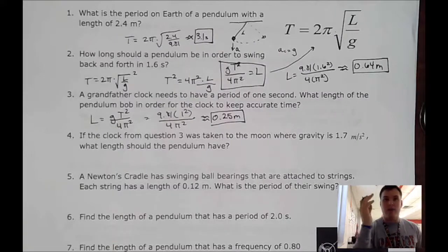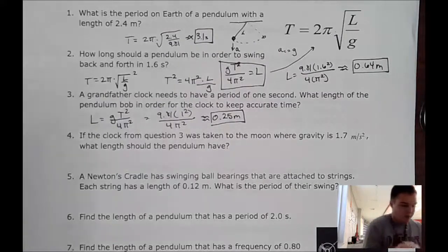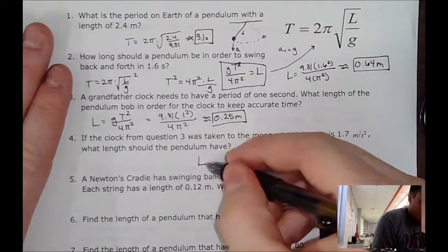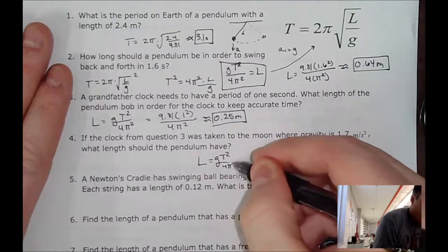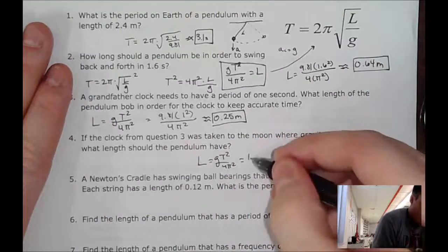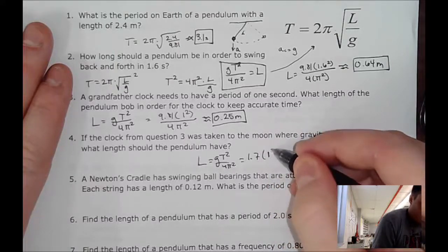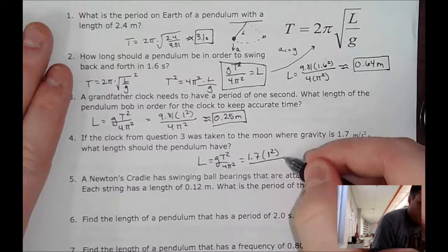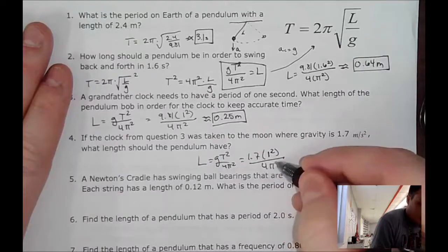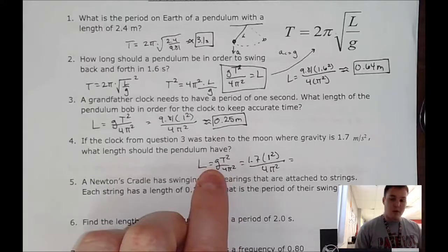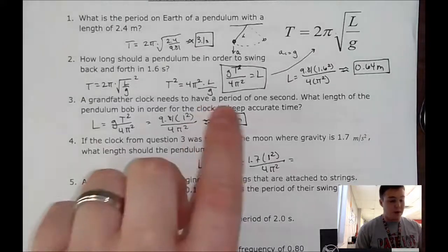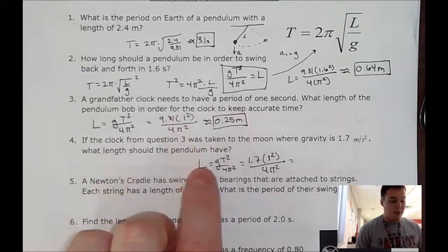So our length, we're still using that same equation. Except now, our gravity is different. We want one second. And still 4π². Now, if you think about it, we're getting a smaller number on top than the previous problem. So that means our length should change.